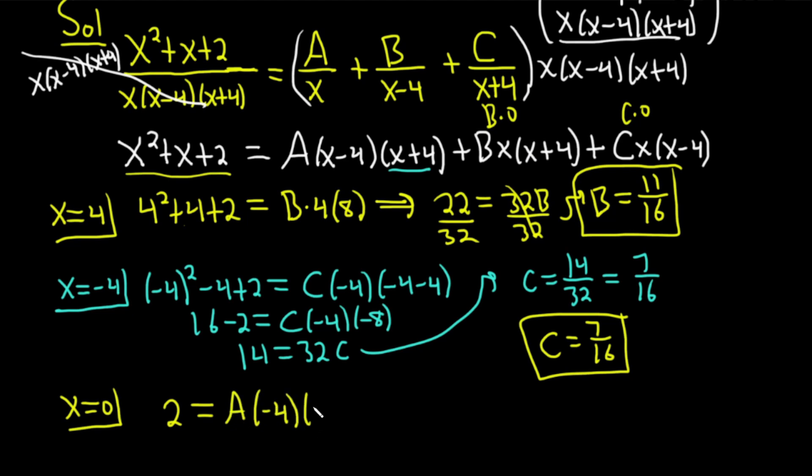It'll be A times 0 minus 4, so negative 4, times 0 plus 4, so 4. This implies that 2 is equal to negative 16A. So dividing by negative 16, we get A equals negative 2 over 16. And that means that A is equal to negative 1 over 8. And I'm also going to put that in a box. Beautiful.